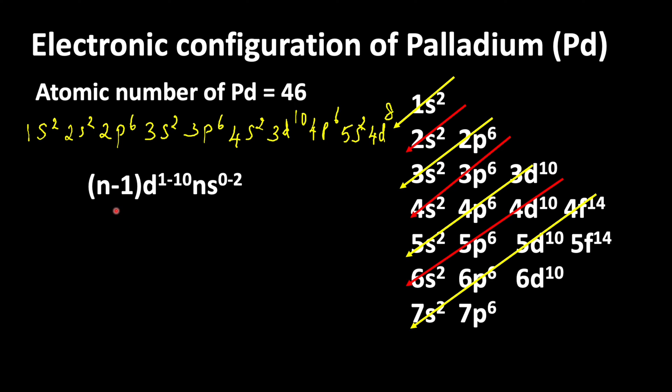But in case of Palladium, since it becomes 5s0, there is no need to show that 5s orbital.